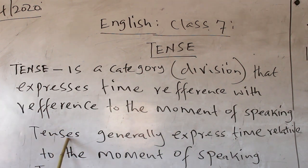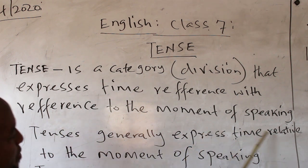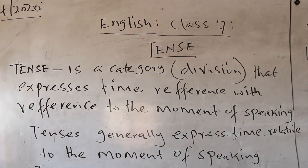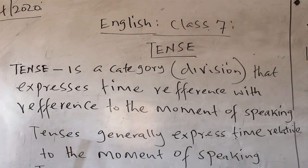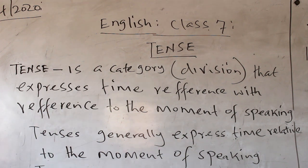Tenses generally express time relative to the moment of speaking. If it is now, we say it is present tense. If it is tomorrow, future tense. If it is yesterday, we say past tense. Tenses generally express time relative to the moment of speaking.